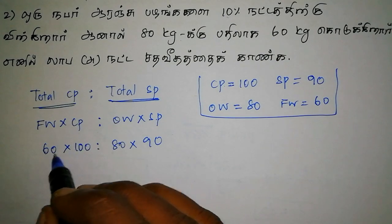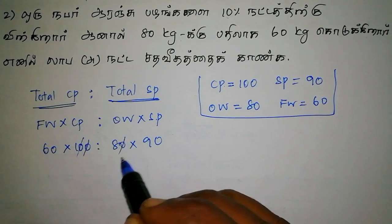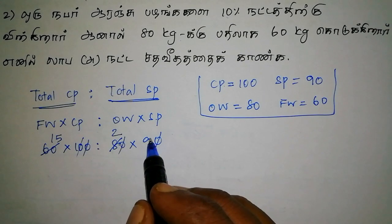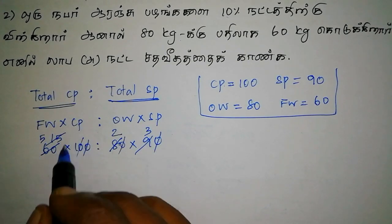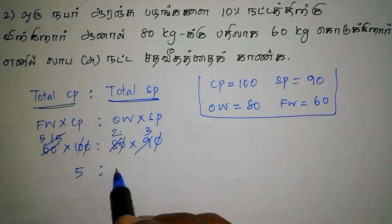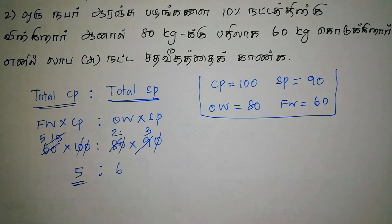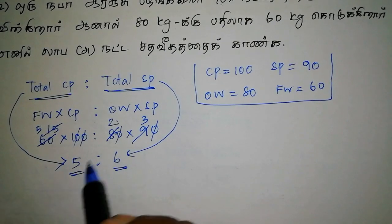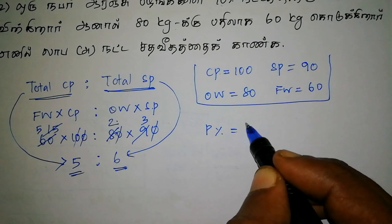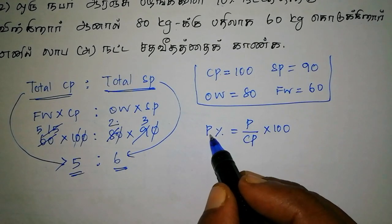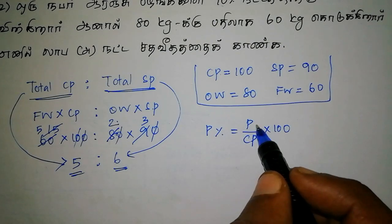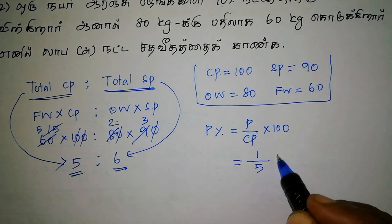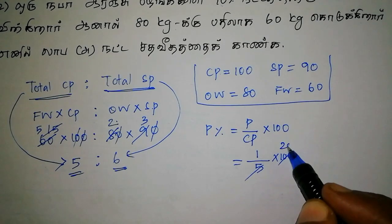Now, if you want to cancel this, if you cancel 4 it will be 2, and if you cancel 4 it will be 15. If you cancel 3 it will be 5. 2 into 3 is 6. Profit percentage equals profit by cost price. If you have the profit 5/6 by cost price 5, if you cancel this it will be 20. The answer is 20.